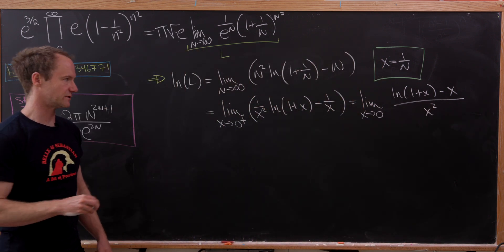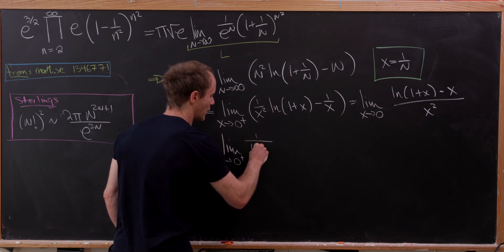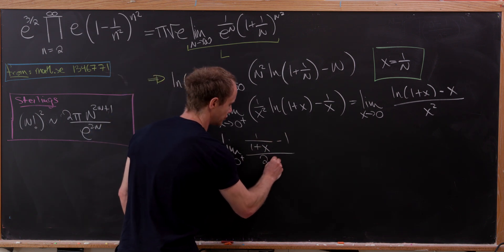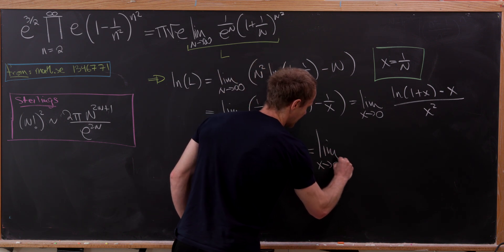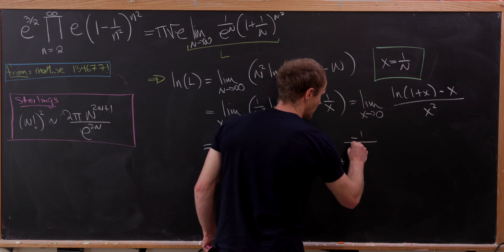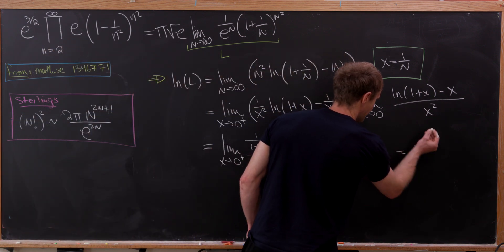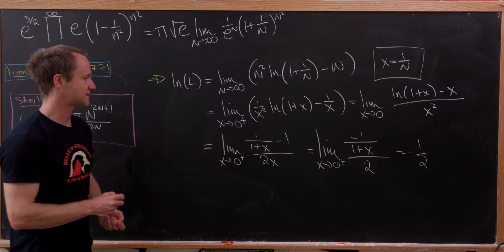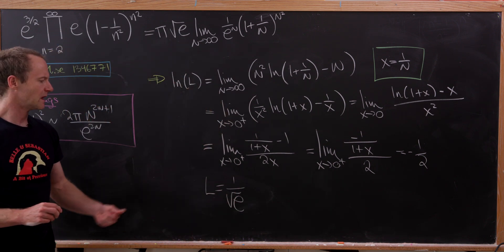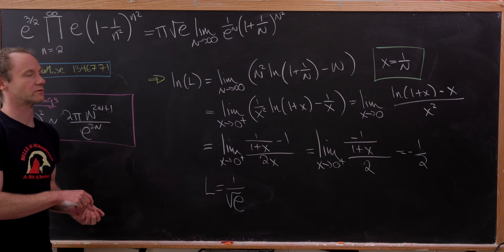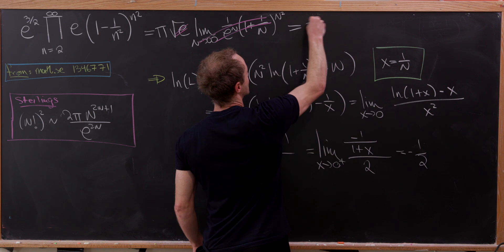That's an indeterminate form of type 0 over 0, so we apply L'Hôpital's rule to get the limit as x goes to 0 of 1 over 1 plus x, minus 1, over 2x. That's another 0 over 0 form, so we apply L'Hôpital once more to get minus 1 over 1 plus x, over 2. As x goes to 0 this goes to negative one half. But that's the natural log of our limit, so exponentiating gives L equal to 1 over the square root of e. Since that limit equals 1 over root e and we had a multiplier of root e, those cancel, and our final value is pi. This infinite product is not just related to pi — it's exactly equal to pi.